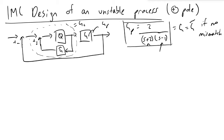If we are also given that there is no plant model mismatch, we can assume that G, which I'm letting be equal to G_P for the sake of simplicity, is equivalent to G̃, which is our internal model. And we're going to design our controller around it.